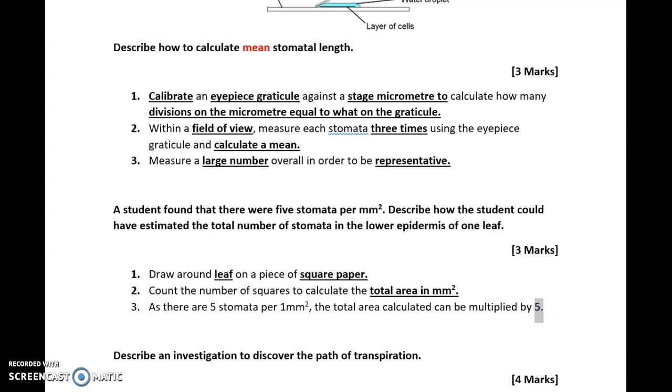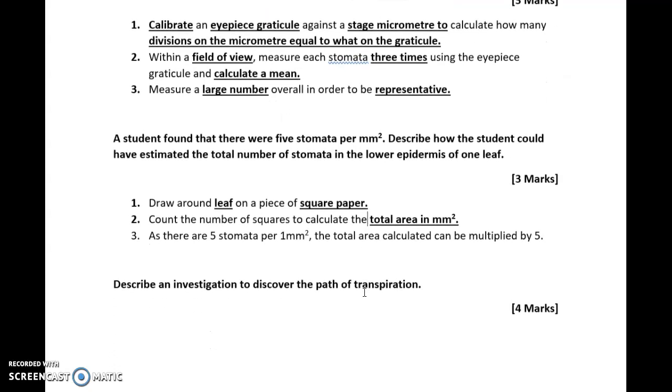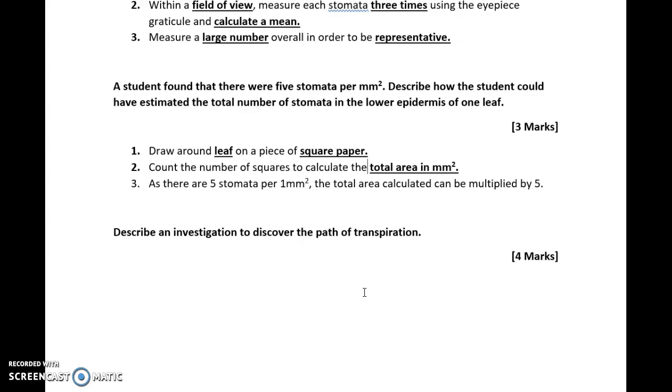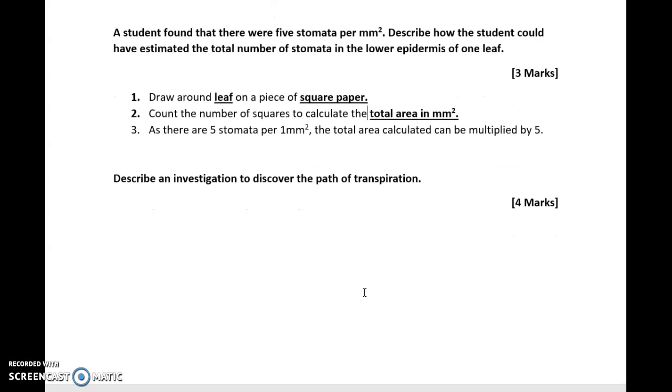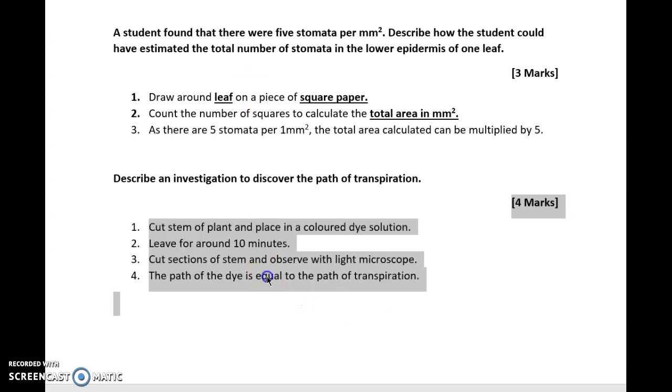As there are five stomata per one millimeter squared, as it says in the question, total area can be calculated by multiplying by five. Obviously, the number here will depend on whatever context given in the question. But the key thing is: draw around on a square piece of paper to get the total area, and then scale up to then get the total number. Describe an investigation to discover the path of transpiration. This has been asked, I believe, on an OCR paper a while back. It's quite a good question, and again, quite simple.